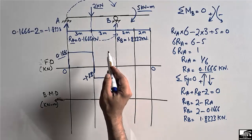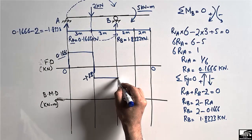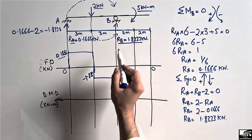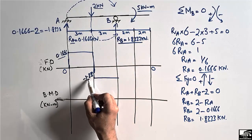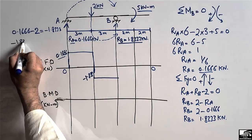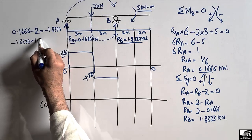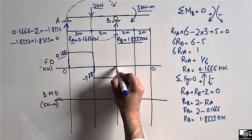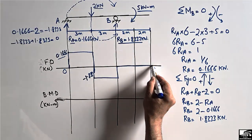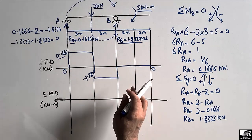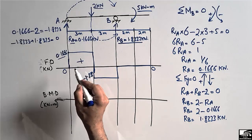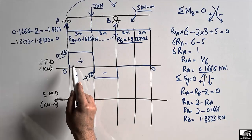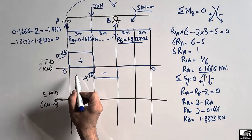The shear force drops to minus 1.8333 at the location of the 2 kN load. Then I draw a straight line again since there is no load on the beam. At support B, there is an upward reaction of 1.8333 kN, which cancels the minus 1.8333, bringing the shear force back to zero. This gives us a positive shear box and a negative shear box, each with a base of 3 meters.